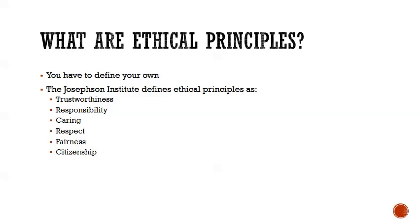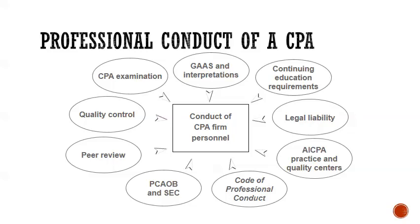You can go into various organizations and disciplines and they'll have their own set. When it comes to the accounting profession, for a certified public accountant there is a definite set of ethical standards that are the minimum level you're supposed to follow. How do you conduct yourself as a CPA? Several things help to drive that. You have to pass a CPA exam, which has questions related to ethics. If you're an auditor, you have to follow generally accepted auditing standards, which tells you how you're supposed to conduct an audit.